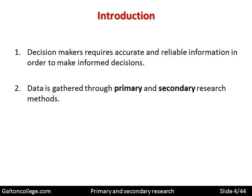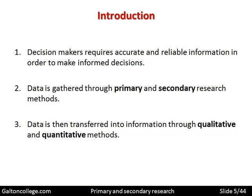Data is gathered through primary and secondary research methods. Data is then transformed into information through qualitative and quantitative methods. These may be statistical methods, computer programs, or different ways of refining and processing information through various algorithms or methods of calculation. Acquiring the data is the first step, then analysing it to get a meaningful picture, and then using that for decision making.